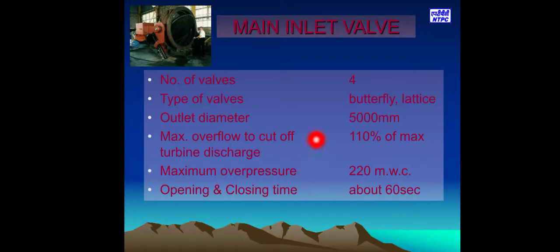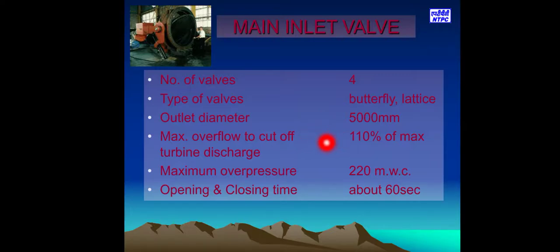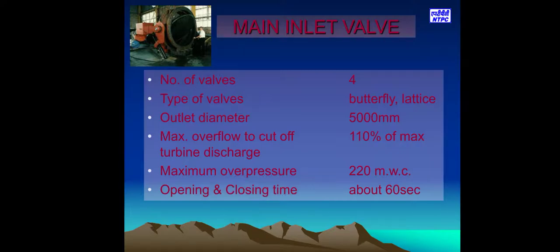Main Inlet Valve: Number of valves: 4. Type of valves: Butterfly. Outlet diameter: 5000 mm. Maximum overflow to cut off turbine discharge: 110% of maximum. Maximum overpressure: 220 MWC. Opening and closing time: approximately 10 seconds.